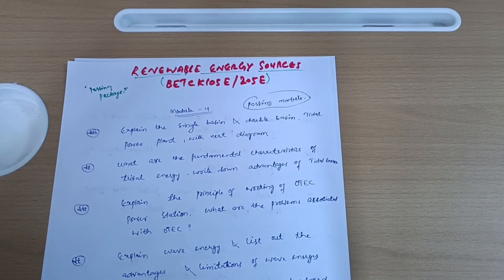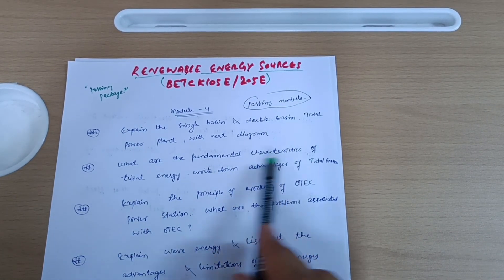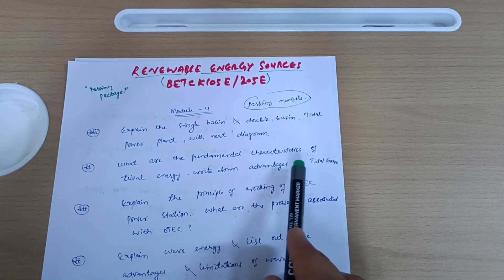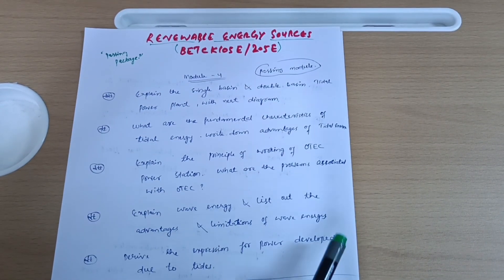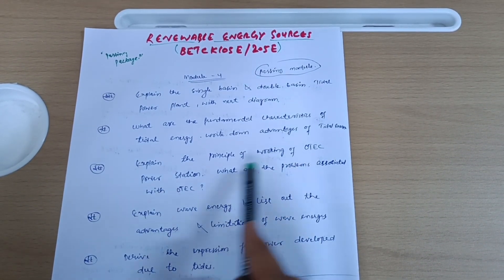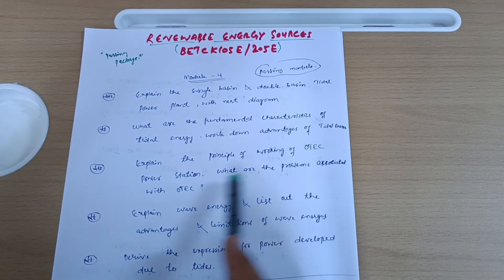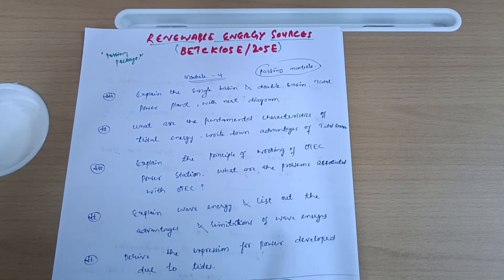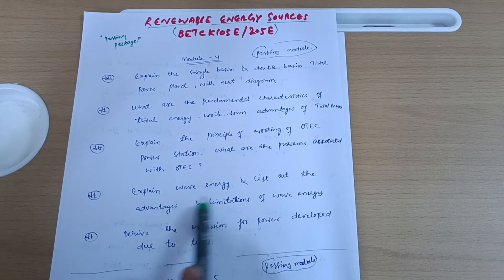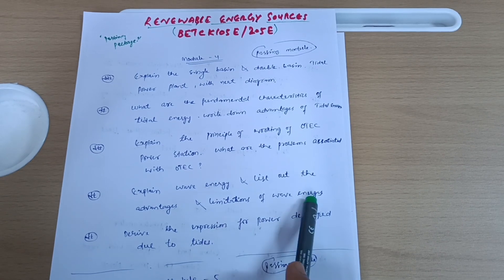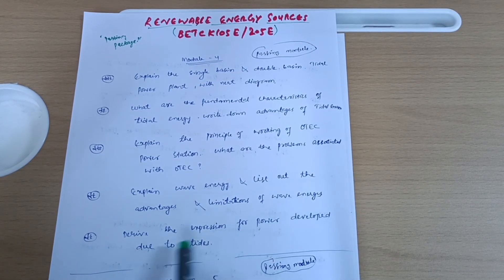Next is: what are the fundamental characteristics of tidal energy? Write down advantages of tidal energy. Explain the principle of working of OTEC power station. What are the problems associated with OTEC? Explain wave energy and list out the advantages and limitations of wave energy, and derive the expression for power development due to tides.